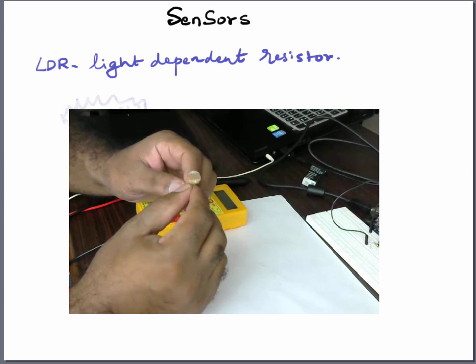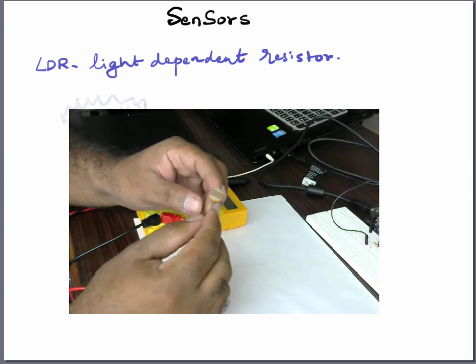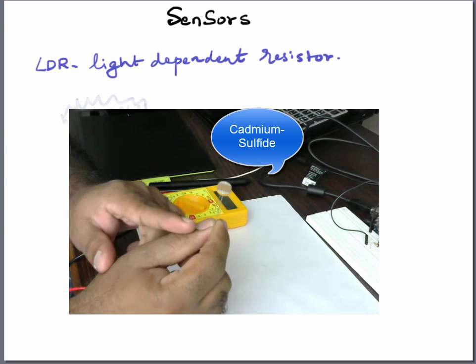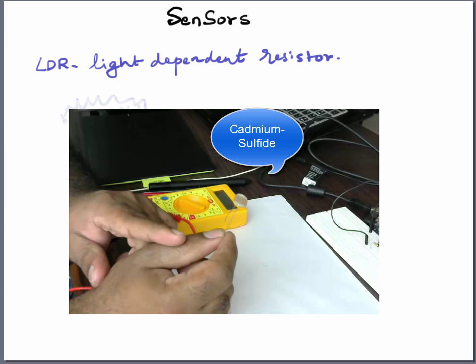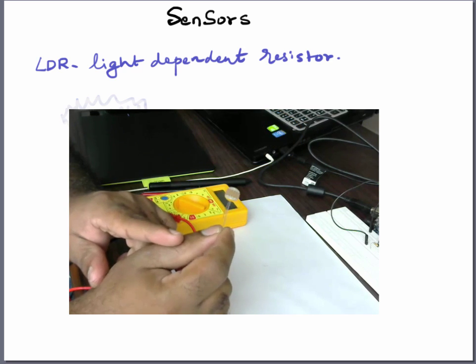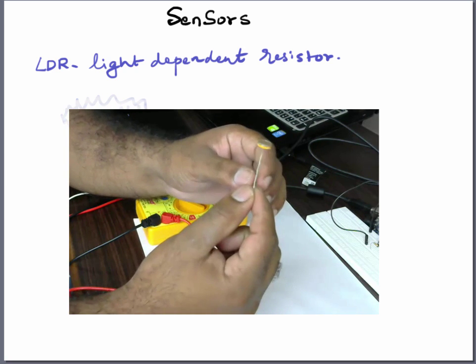A couple of things we need to know about this LDR is that it is made from cadmium sulfide. It's nothing that we can use that information but just as general knowledge. And this is basically a big resistor. The way to test an LDR is using a multimeter.